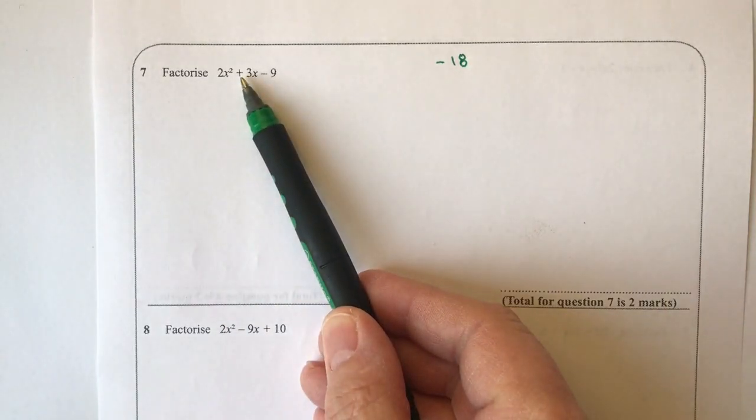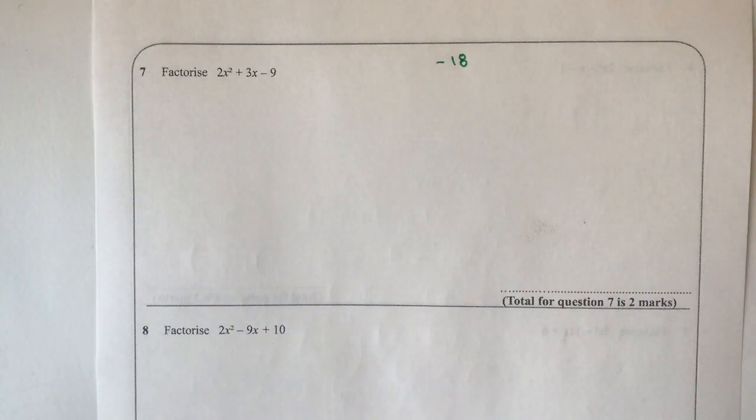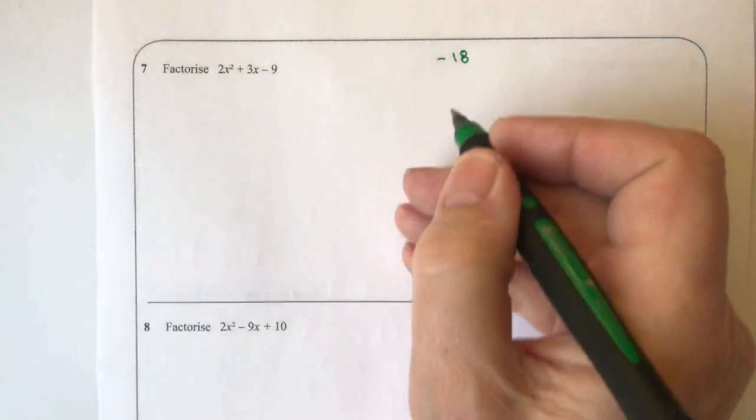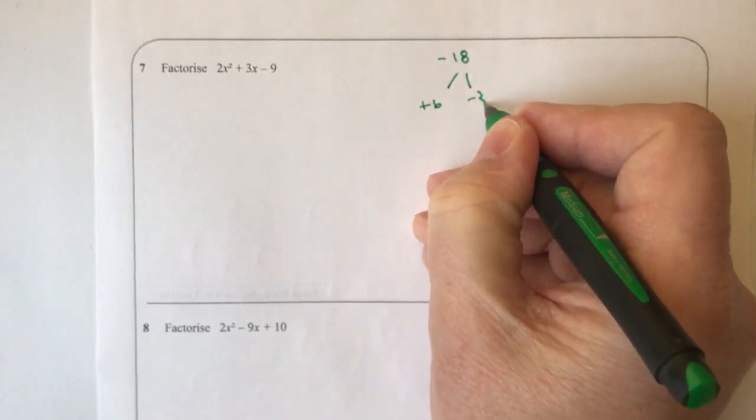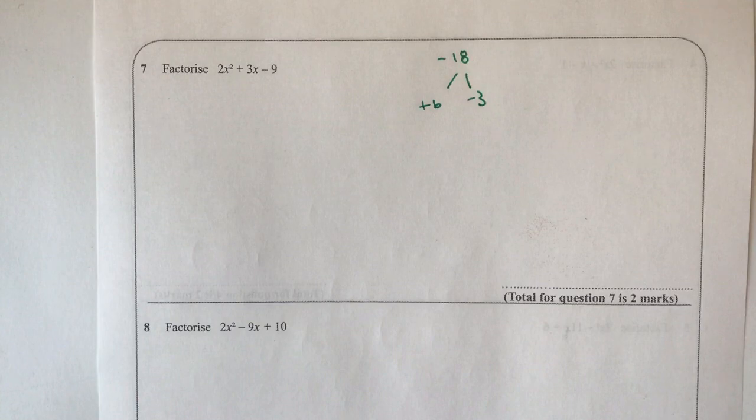So I could choose something like 9 and 2, but that's not going to work for me because when I add those together it's going to make 11 or 7. In this particular case, I'm going to choose positive 6 and negative 3, because they're the only two factors of minus 18 that when I add them together will make plus 3.